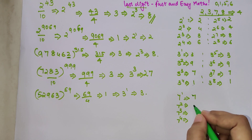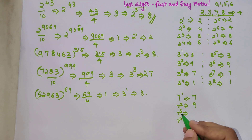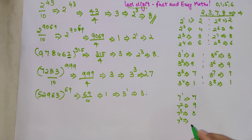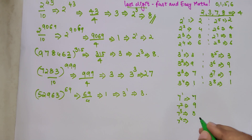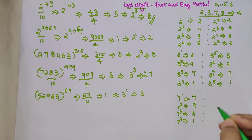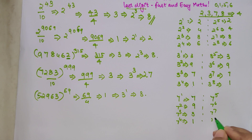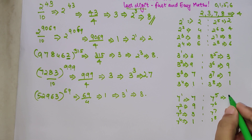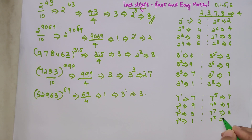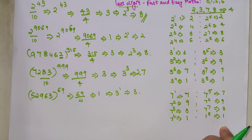7 raised to 1 = 7, 7 raised to 2 = 49 so last digit is 9, 7 raised to 3 = 9 × 7 = 63 so last digit is 3, 7 raised to 4 = 3 × 7 = 21 so last digit is 1. Continuing: 7 raised to 5 gives 7, raised to 6 gives 9, raised to 7 gives 3, raised to 8 gives 1. The cycle 7, 9, 3, 1 repeats every 4 powers.